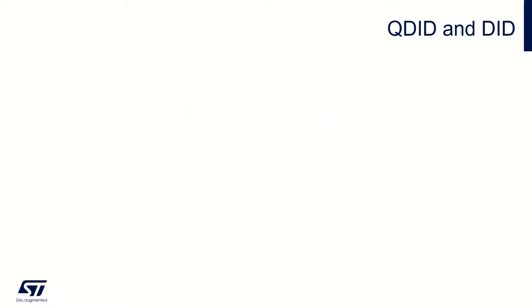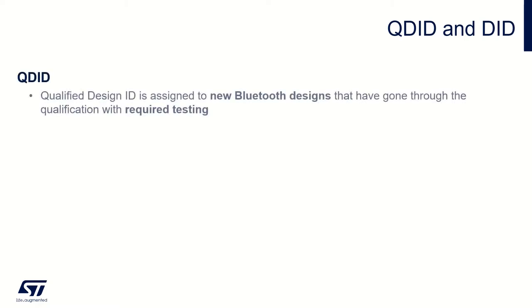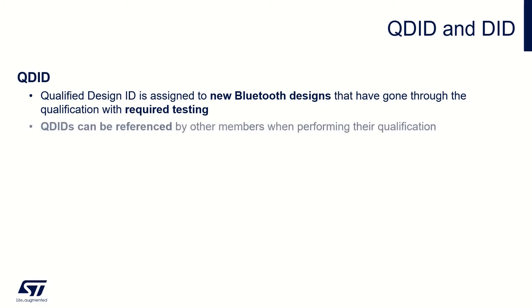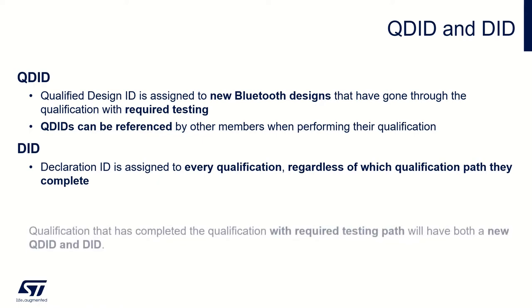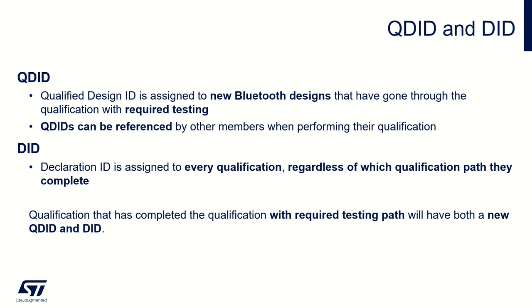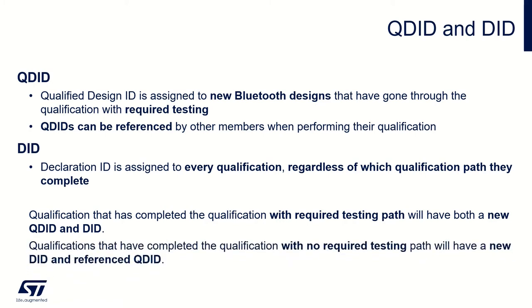In Bluetooth qualification we encounter the abbreviations QDID and DID. QDID stands for Qualified Design ID and is assigned to new Bluetooth designs that have gone through qualification with required testing. QDIDs can be referenced by other members when performing their qualification, and it only applies to end product and subsystem product types. DID stands for Declaration ID and is the identifier assigned to every qualification, regardless of which path they complete. A qualification that completed the required testing path will have both a new QDID and a DID, while one that completed the no-required-testing path will have a new DID and a referenced QDID.